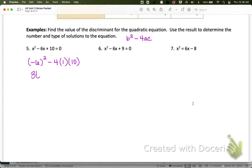We get 36 minus 40, which equals -4. Since -4 is less than 0, the value of the discriminant is -4, and that means there are going to be two imaginary solutions. That's all we need to know.